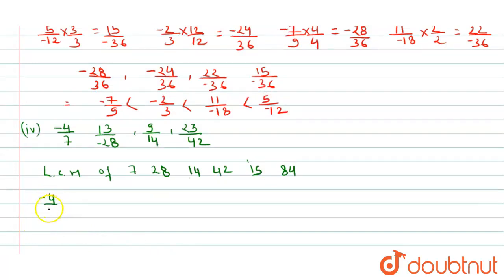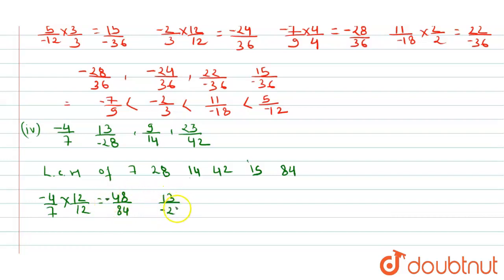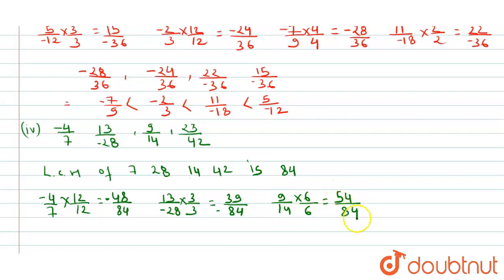Converting to denominator 84: -4/7 × 12/12 = -48/84. 13/(-28) × 3/3 = 39/(-84). 9/14 × 6/6 = 54/84. 23/42 × 2/2 = 46/84.